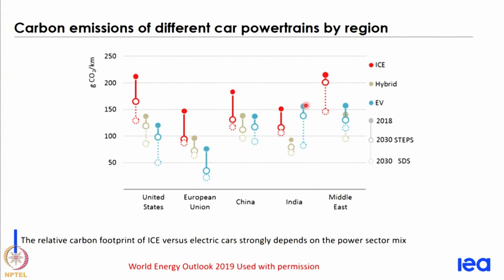When we talk of shifting from IC engines to electric vehicles, this will definitely reduce local emissions, but on global emissions the reduction or non-reduction depends on the carbon intensity of the electricity mix. Since the Indian electricity sector is predominantly based on coal, this results in EVs being slightly higher in emissions. In the future, depending on how the mix changes, in the sustainable development scenario it would be much lower, but this comparison between IC engine and electric vehicles depends very significantly on the electricity mix.